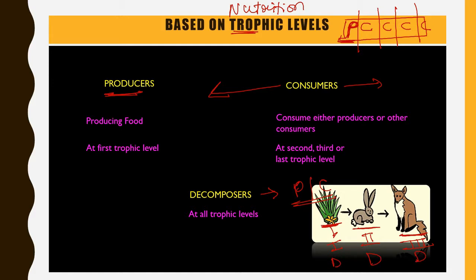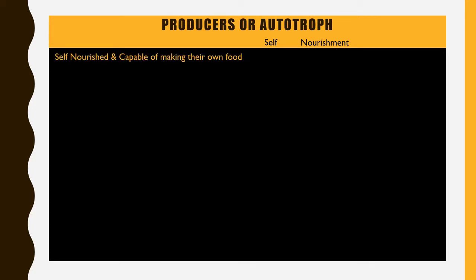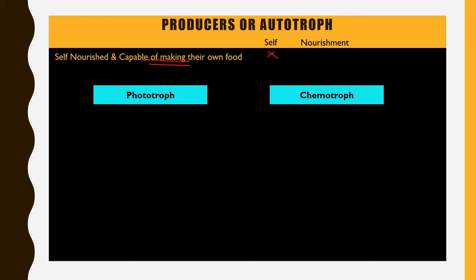If a rabbit dies or a plant sheds some leaves, those will be decomposed by decomposers present at all trophic levels. Producers are also called autotrophs — 'auto' means self and 'troph' means nourishment — signifying that they are self-nourished and capable of making their own food. Autotrophs use two types of methods to make their own food, dividing them into phototrophs and chemotrophs.